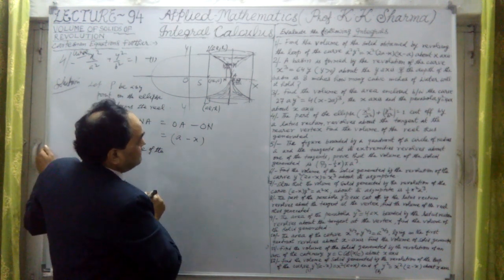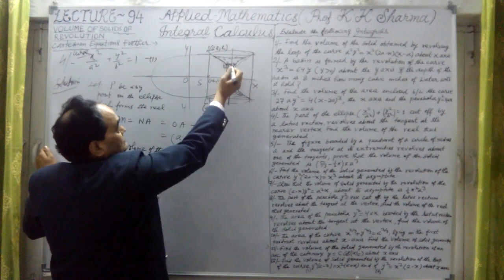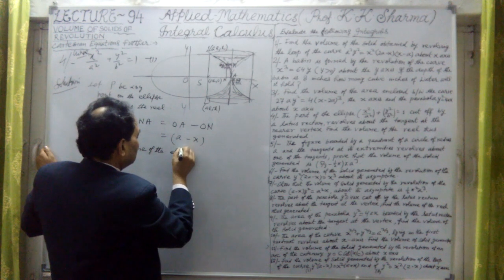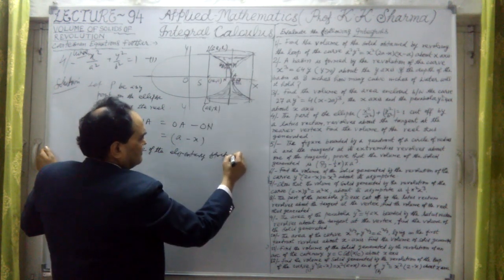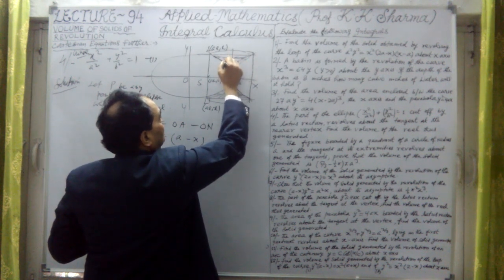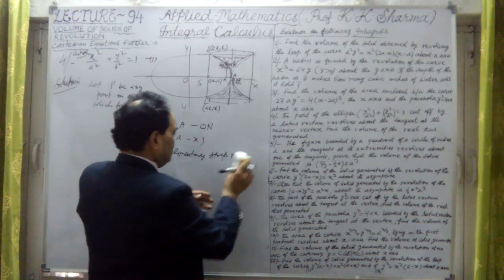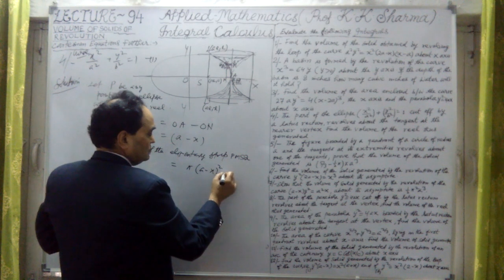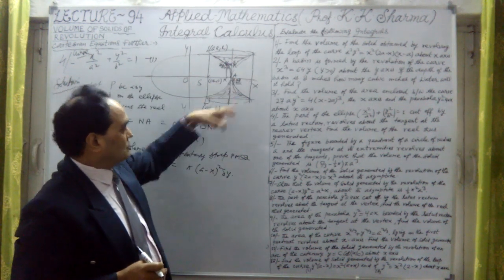The volume of the elementary strip is pi times (A minus x) squared times delta y — here the height is delta y. The elementary strip PMSQ is given by pi times (A minus x) squared times delta y. This delta y is the width of the strip, so this is the volume of this elementary strip.